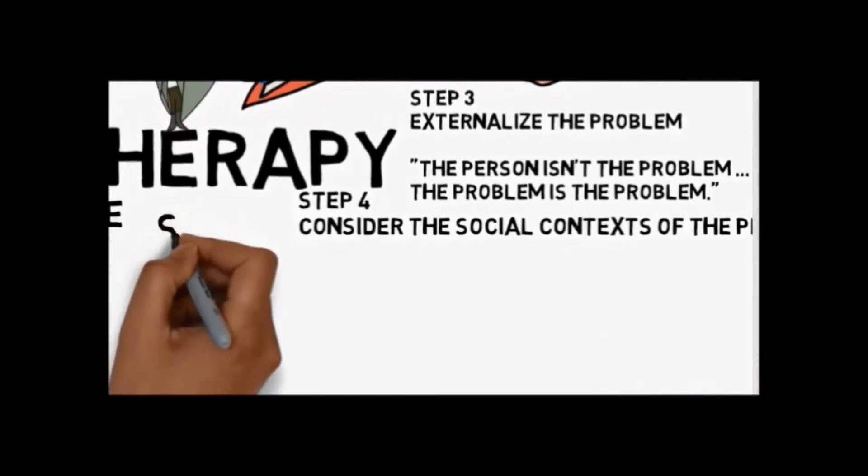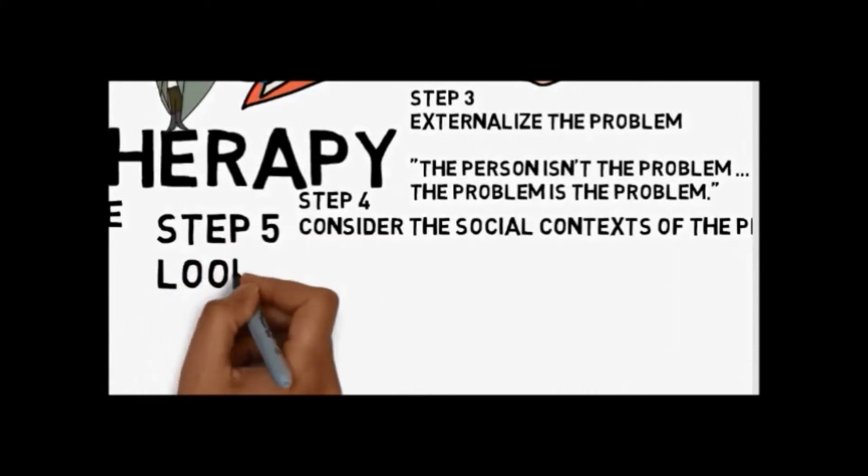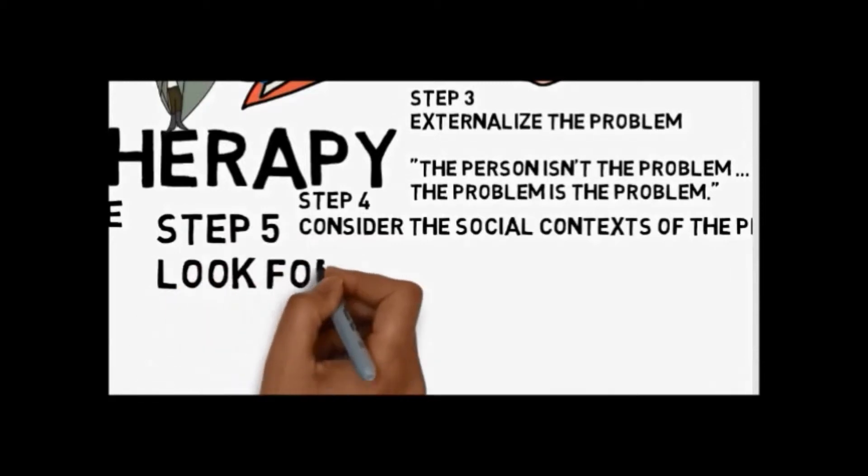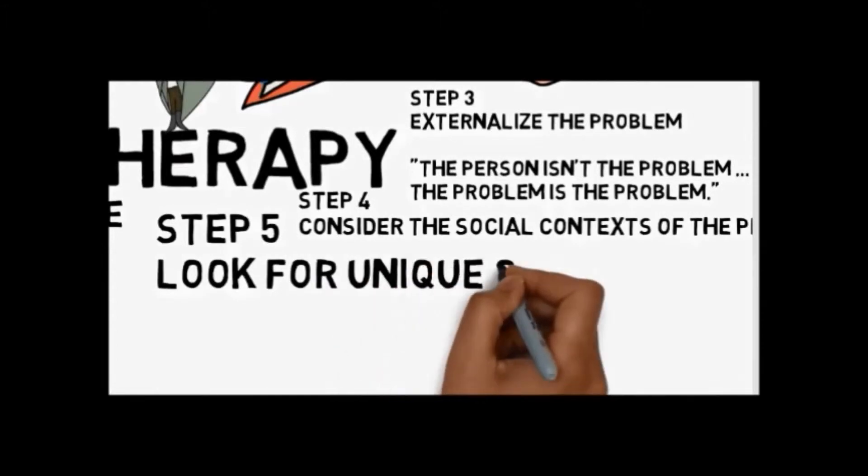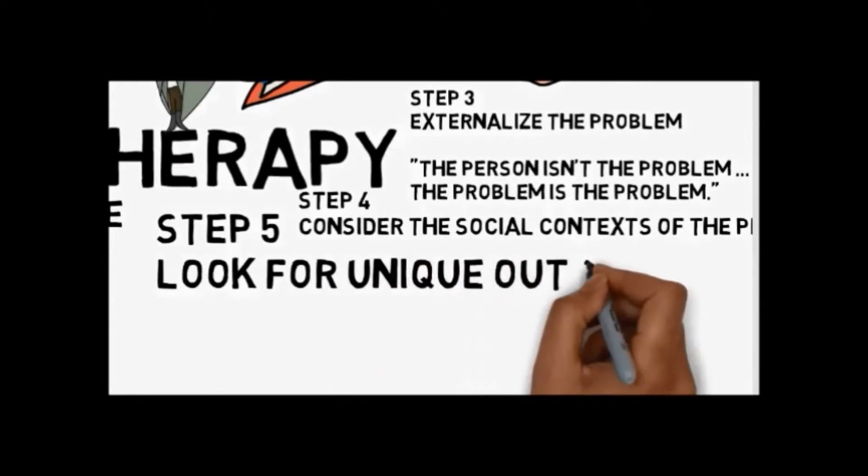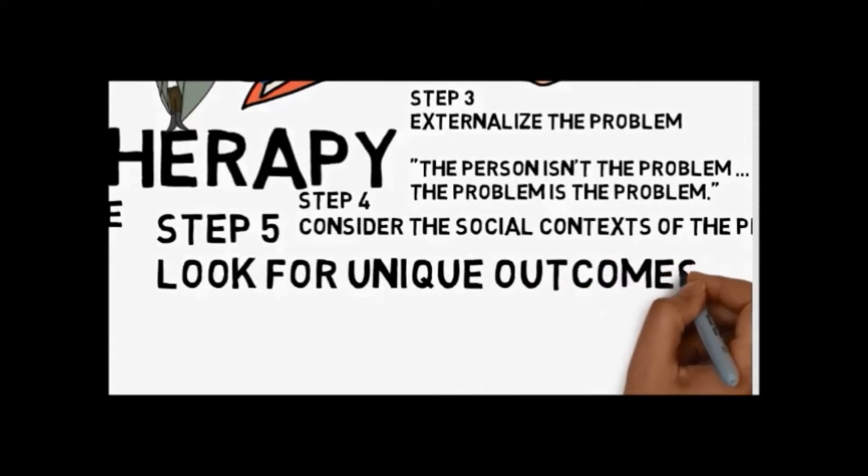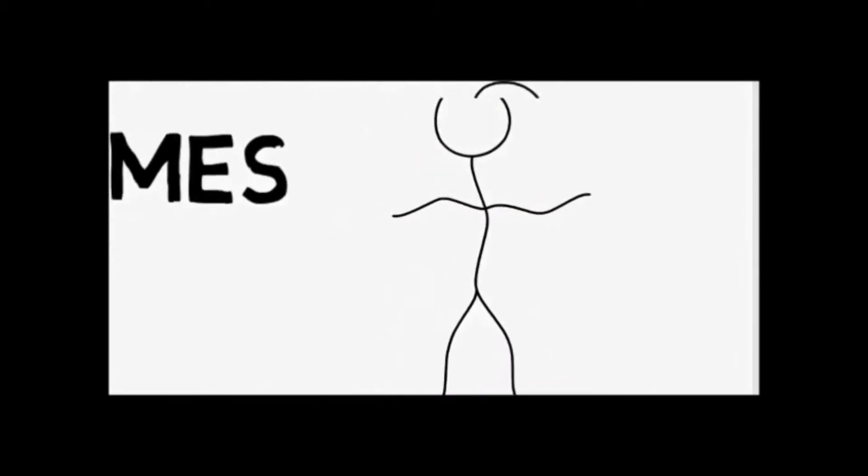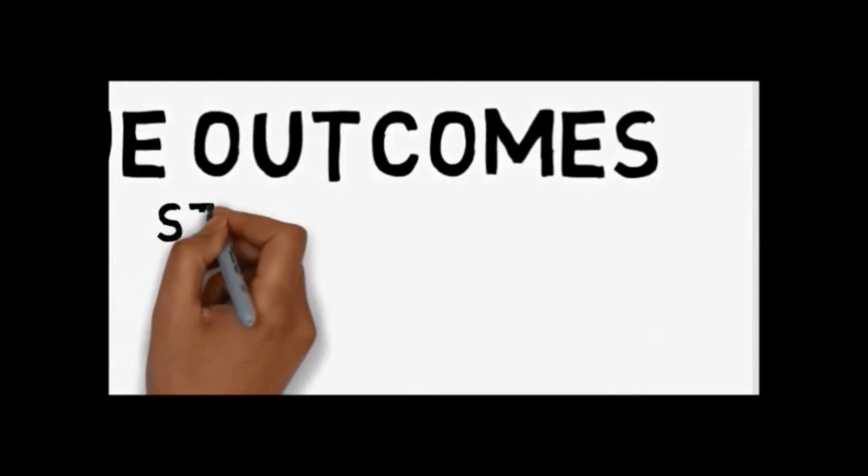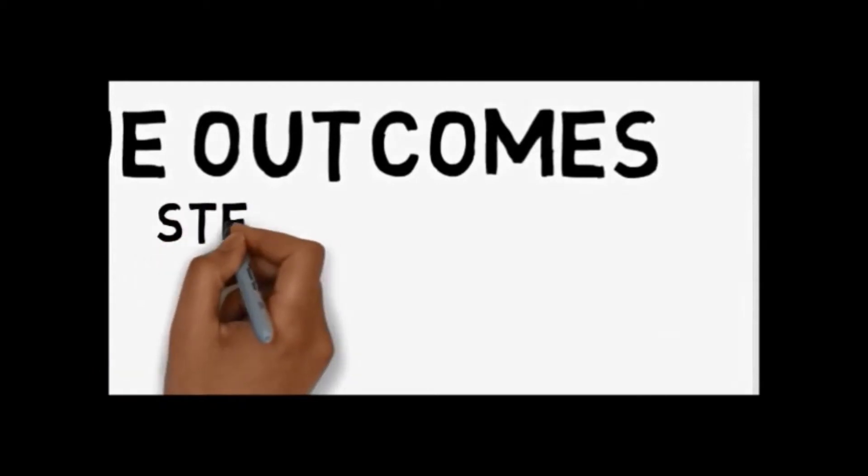Then in step five, there is the exploration of unique outcomes. If the problem saturated narrative is the metanarrative, then it sets parameters for most of experience interpretation. However, there will be times when the problem is not present and the metanarrative is wrong. And it's important to highlight these exceptions. And this gives a place for their story to begin to have hope of life without the problem.